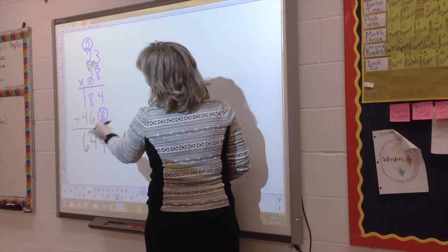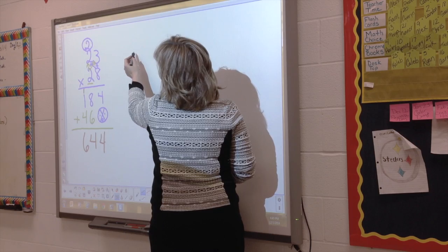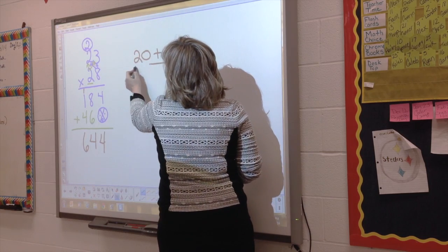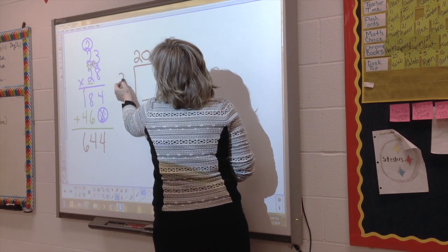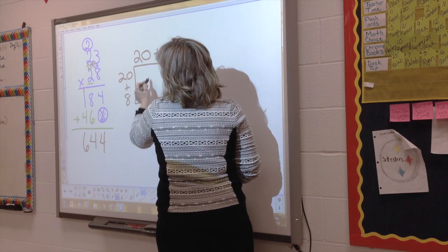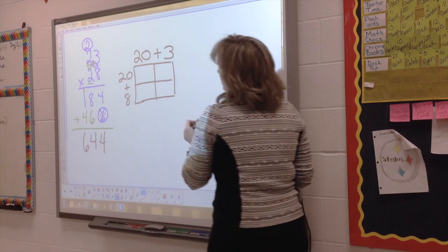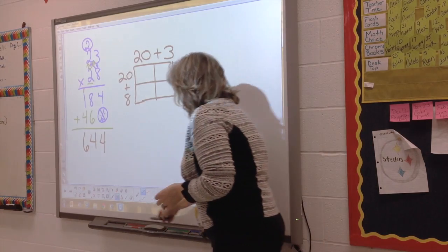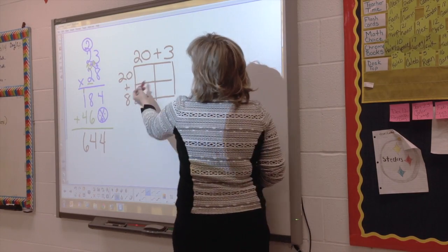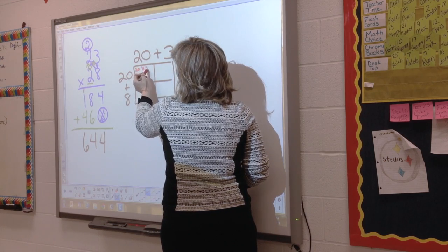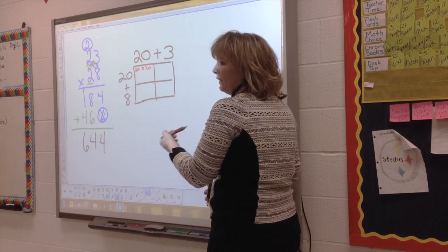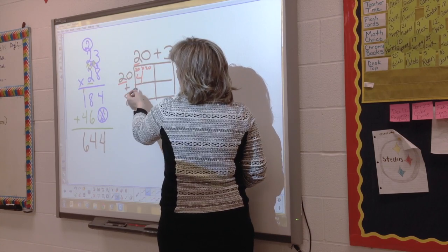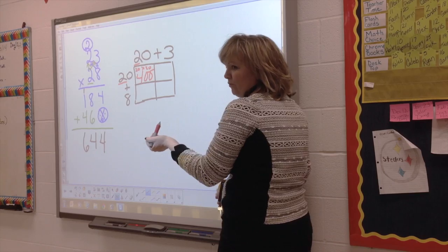Common Core — two different ways we can do it. The area model, the box method, says 23 is the same thing as 20 plus 3. I can also say 28 is the same thing as 20 plus 8. If you know your basic facts, this is easy. Using my basic facts, this box would be my 20 times 20. Using basic facts, I would say 2 times 2 is 4, but this is a 10 and this is a 10, so 10 times 10 is 100 — so now I have 400 there.